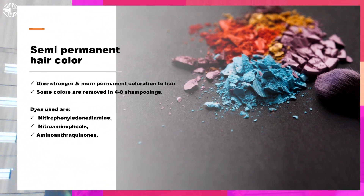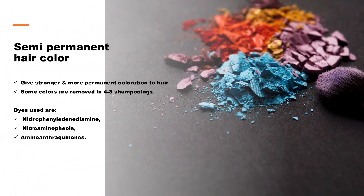Next is the semi-permanent hair color. As the term signifies, it stays longer than temporary hair colors and gives stronger, more permanent coloration. Some colors are removed in 4 to 8 shampoos — the stay period is typically 6 to 8 washes. The dyes used in semi-permanent hair colors are applied as such, without combinations. Examples of dyes preferred for semi-permanent colors include nitroaminophenols, aminoanthraquinones, and nitrophenylenediamine — these chemical substances do not require any sort of oxidation.